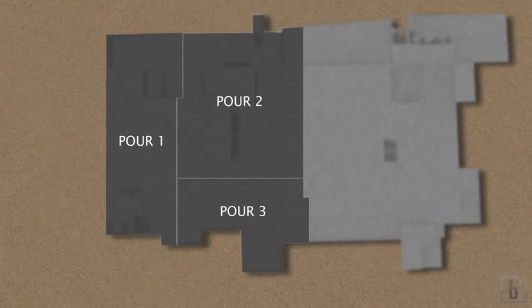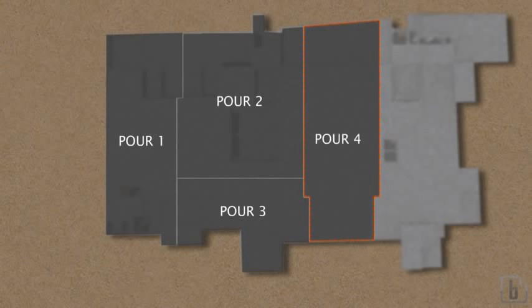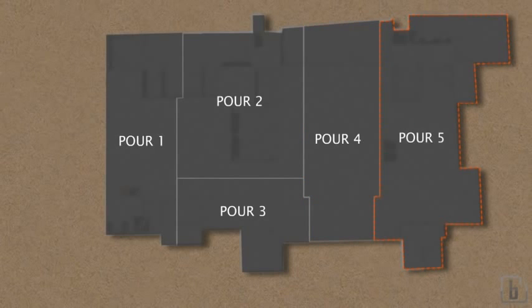Concrete shall not be dropped from a height more than 1 meter. In such cases, trunking or chutes shall be used and shall be kept closed and used in such a way so as to avoid segregation.